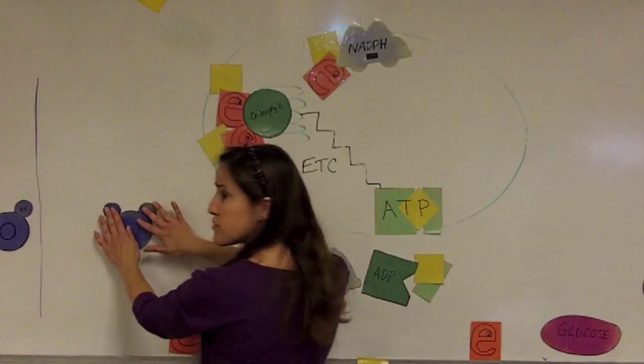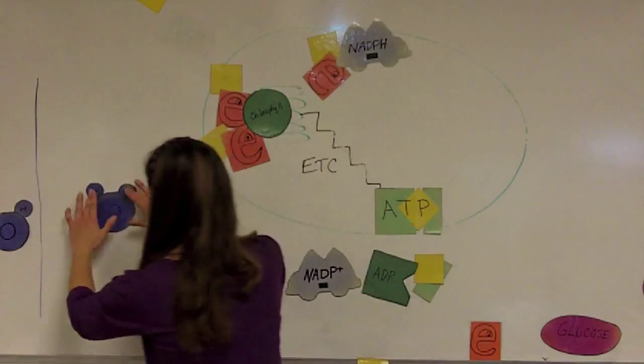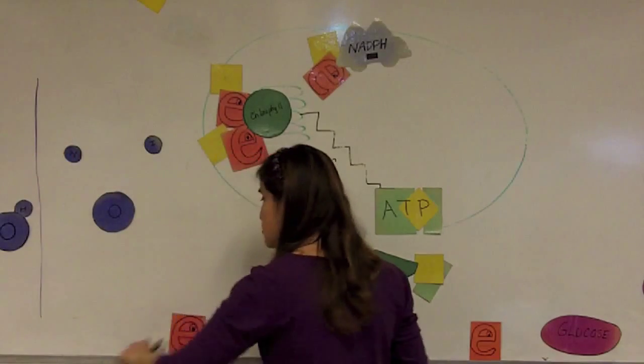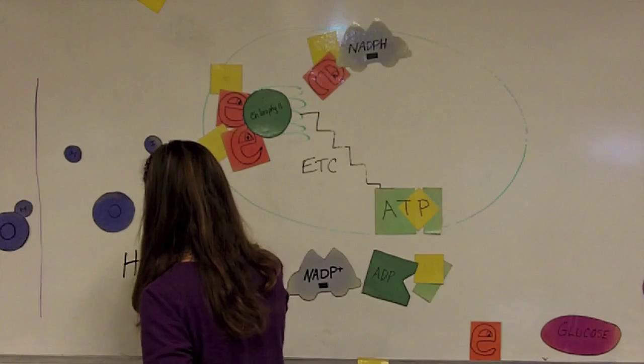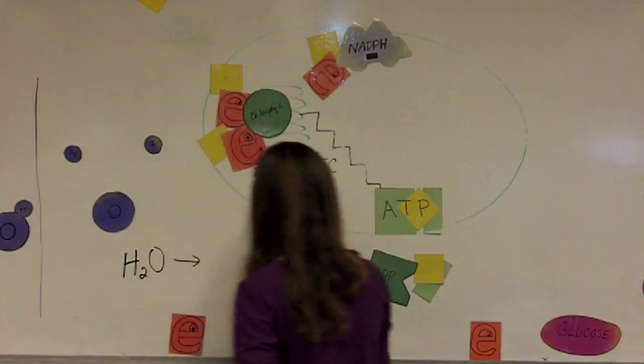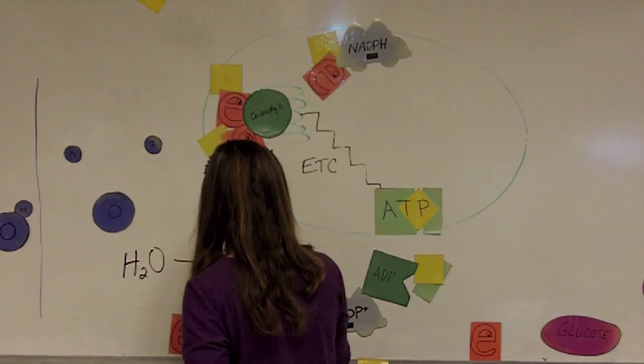So water molecules within the thylakoid membranes are broken down by enzymes. The hydrogen atoms are separated off. So if you think about water, water is H2O. You can separate that into hydrogen and oxygen.